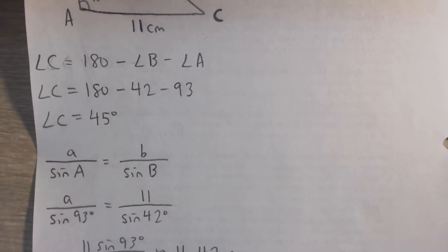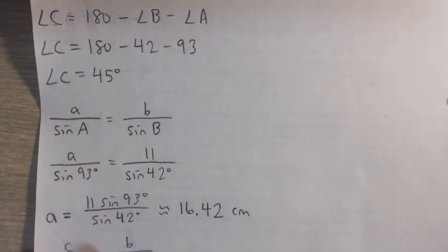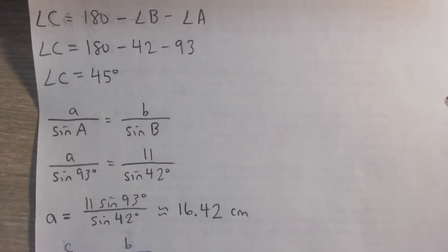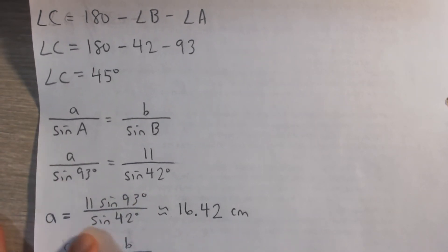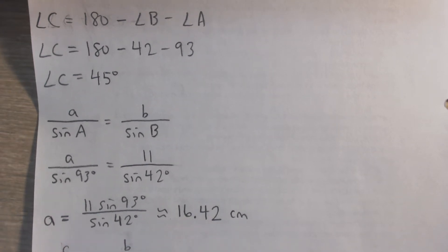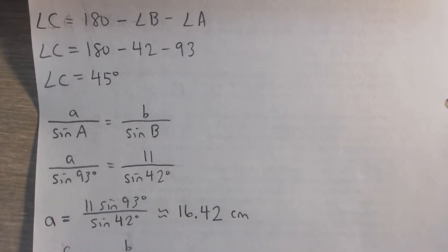So plug in our values and solve for a, multiply both sides by sin 93 degrees. We get a equals 11 sin 93 divided by sin 42. If you plug that into your calculator, it's about 16.42 centimeters.